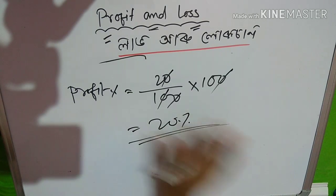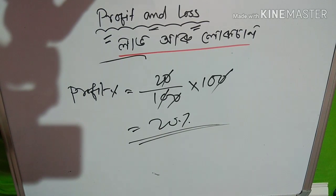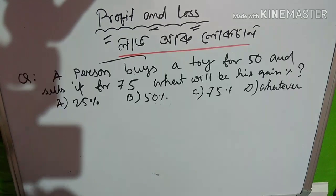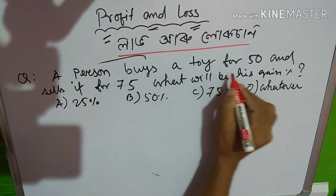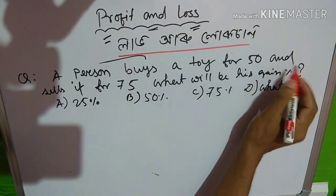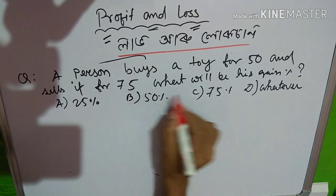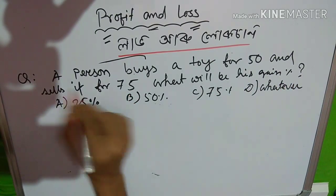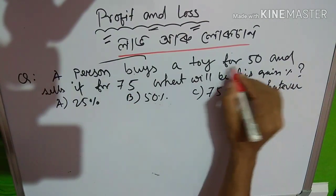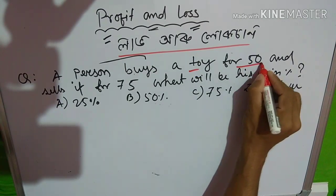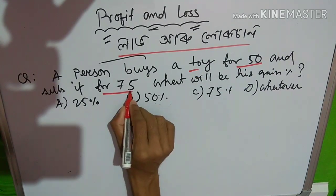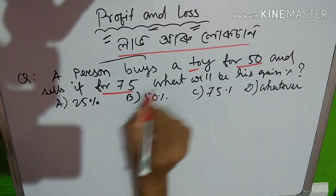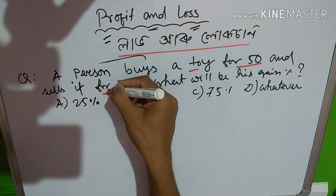Profit percentage — a person buys a toy for 50 rupees and sells it for 75 rupees. What will be his gain percentage? He will have 60 rupees. He sold it for 75 rupees.